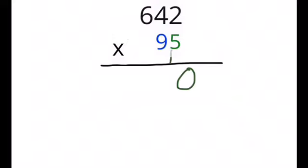Then 5 times 4 is 20, add your 1 is 21, so you put down your 1, add your 2. 5 times 6 is 30, add your 2 is 32, so your 3 and then your 2.